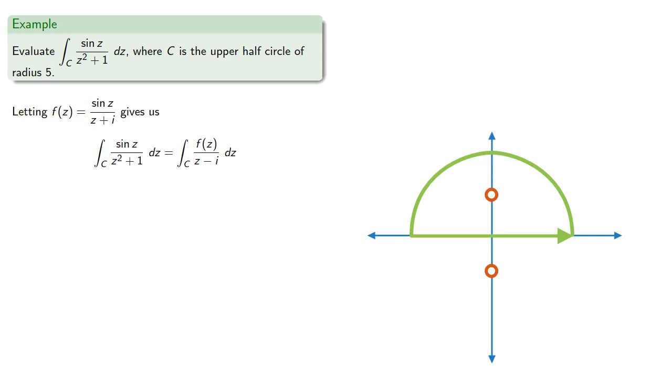And Cauchy's integral formula tells us this integral is 2πi times f at the bad point.